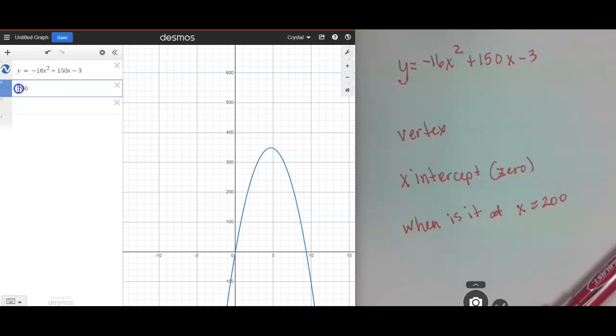it makes a horizontal line at Y equals 200. And then I can go right here and it automatically tells me where those cross. It would go at 1.64 and then it would go back there at 7.735.